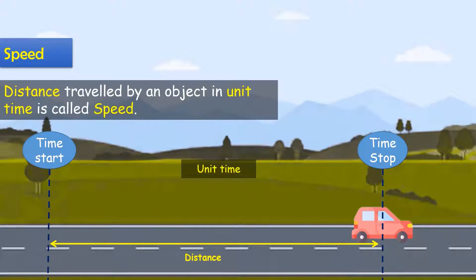For example, when you go to school, whether by cycle or on foot, your speed is never constant throughout the journey. Sometimes you go fast, sometimes slow.